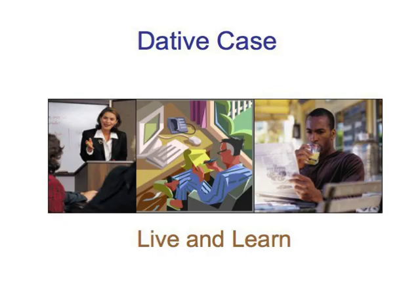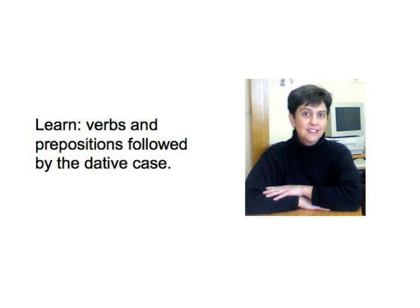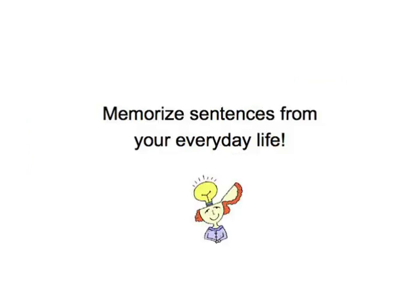As we always use the dative after certain verbs and after a number of prepositions, we can take these as an easy starting point for learning the dative forms. But rather than just learning two lists, we should memorise sentences in which these verbs and prepositions occur — and not just any sentences, but sentences that you actually use in your everyday life. Your memory is very much needs-based: it will remember language that's important to you much better than words without a real-life context.